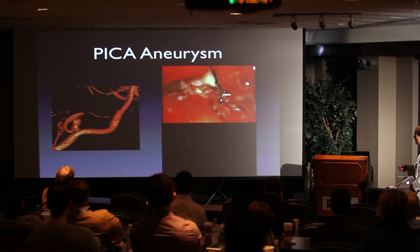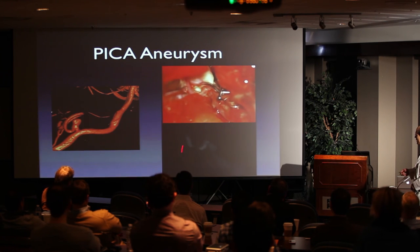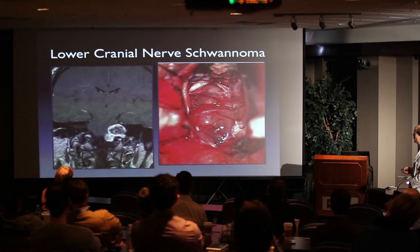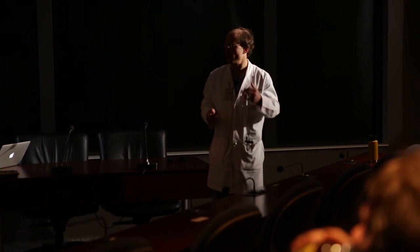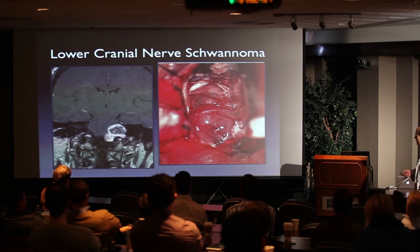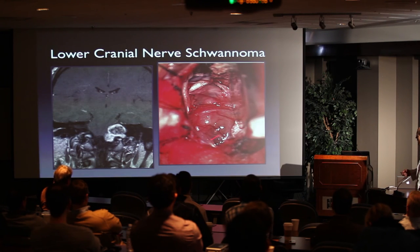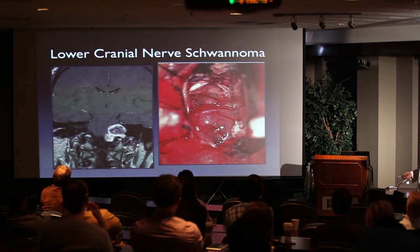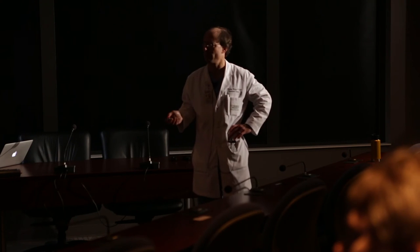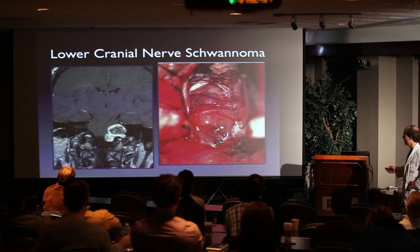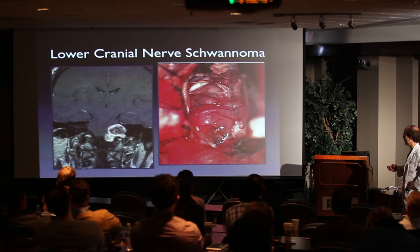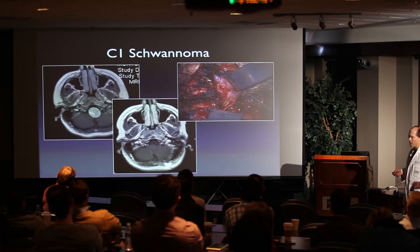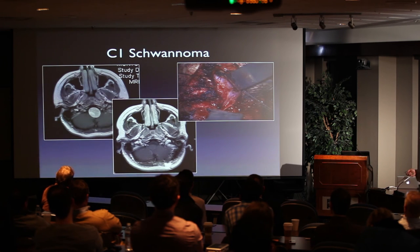PICA aneurysm is also very common and a great exposure for this area. You can see the aneurysm here — very straightforward clip — and then ICG confirming filling of the PICA. Lower cranial nerve schwannomas are often treated with Gamma Knife, but occasionally surgery is undertaken. This is a vagal schwannoma — very nice exposure of the entire tumor, with the seventh/eighth nerve complex and the ninth nerve visible. This patient underwent subtotal resection with Gamma Knife because she had intact vagal function, and she's done very well about eight years out.